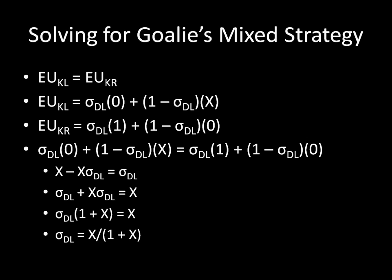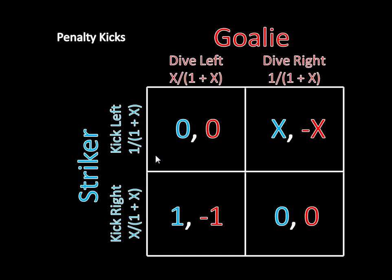We can now write out the full mixed strategy Nash equilibrium: the striker kicks to the left with probability 1/(1 + x) and to the right with probability x/(1 + x); the goalie dives to the left with probability x/(1 + x) and to the right with probability 1/(1 + x). What's really interesting is to analyze how this game changes as a function of x — as the striker becomes more accurate to his right side. This is one of the most important topics in game theory: the study of comparative statics, which lets us see how changing dynamics affect strategies and payoffs. That will be the topic of the next video.